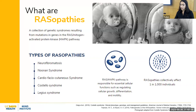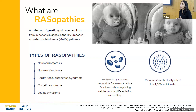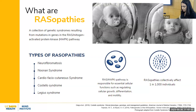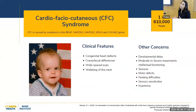Although individually each syndrome is quite rare, together the RASopathies represent a common group of genetic syndromes that affect one in 1,000 individuals. The two RASopathies I'll be discussing are Costello syndrome and cardio-facial cutaneous syndrome.